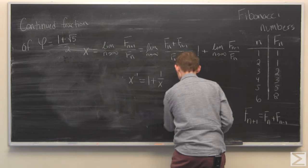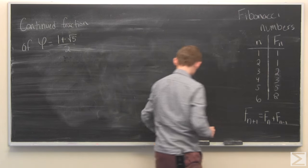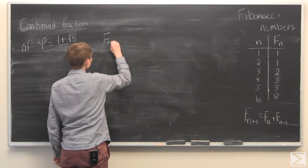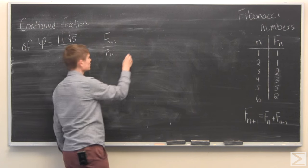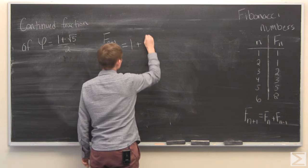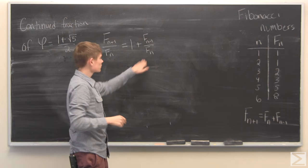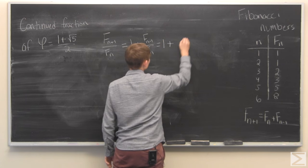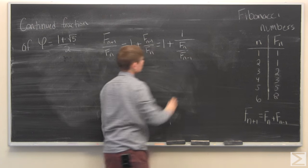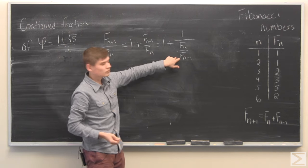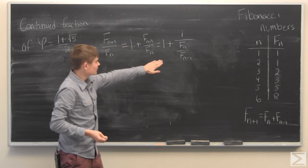If we start with f n plus 1 over f of n, or the nth Fibonacci number, we've already simplified this to this expression. Now what we're going to do is a slight little trick. We're going to define the same expression as this. So this fraction is flipped and we put it as a reciprocal. You can see that we can do the same thing as we did here.